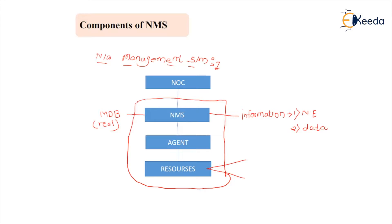Resources are of two types: managed objects and unmanaged objects. Managed means resources which can be easily controlled by the uppermost device. Unmanaged means they cannot be controlled by the uppermost device. Managed objects are more expensive because selecting managed objects to design or develop the network means the output success efficiency rate will always be higher than selecting unmanaged devices. So resources are classified as managed resources and unmanaged resources.